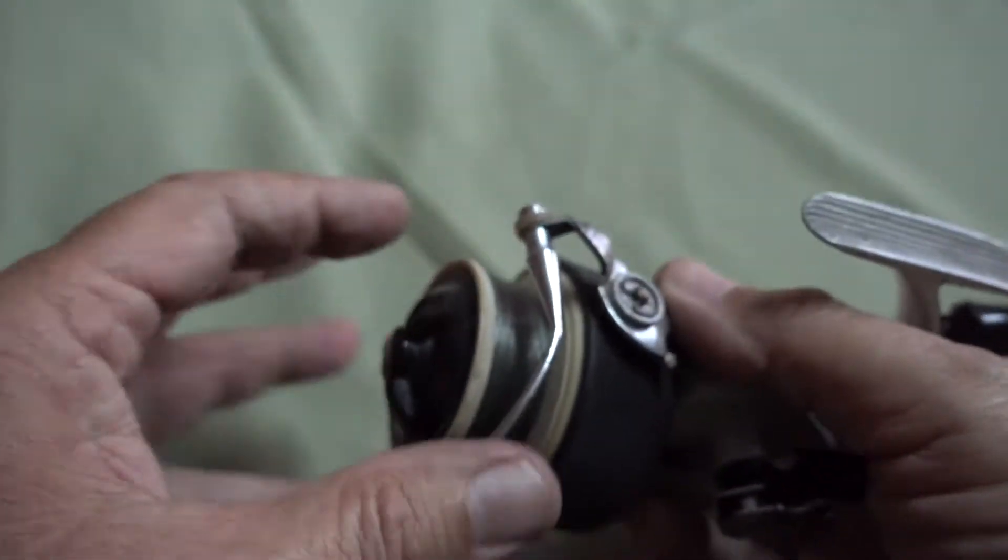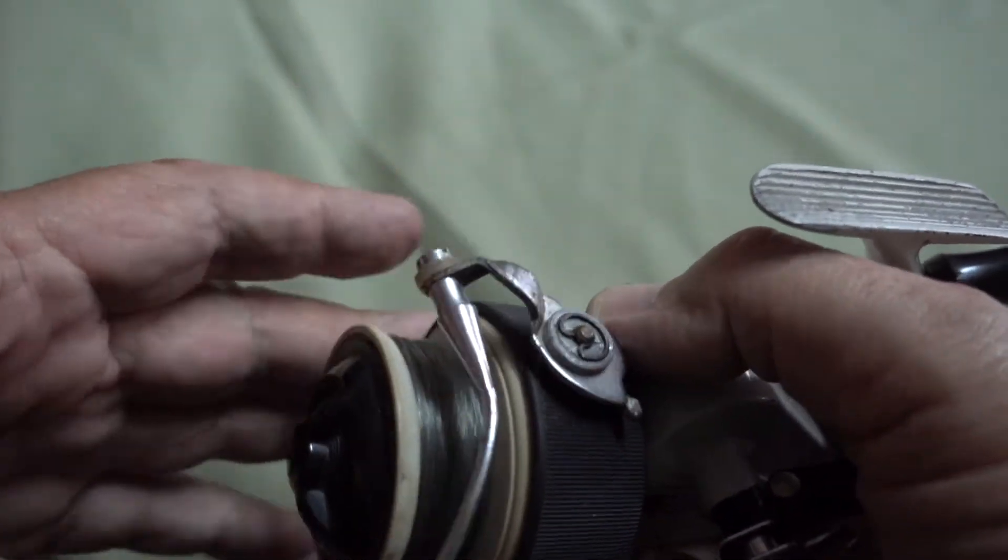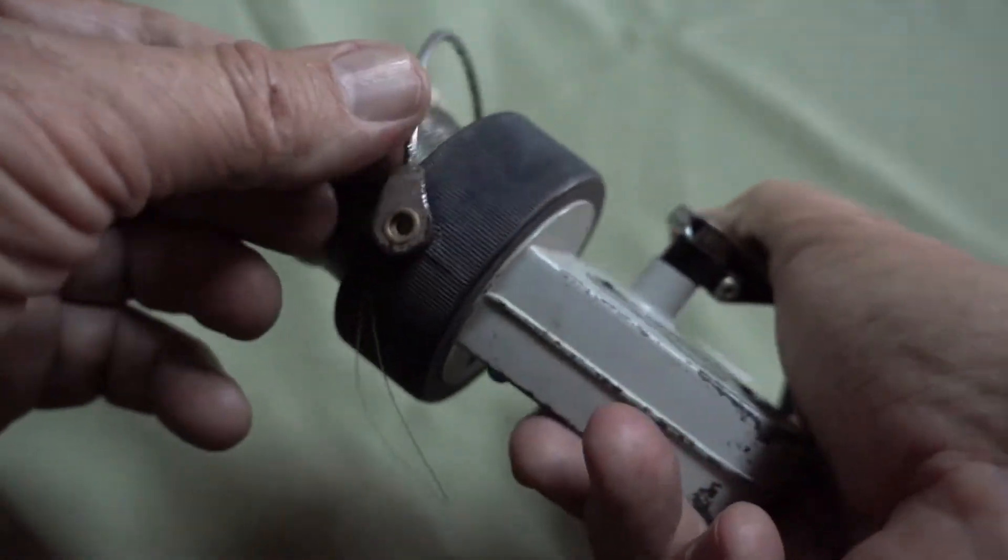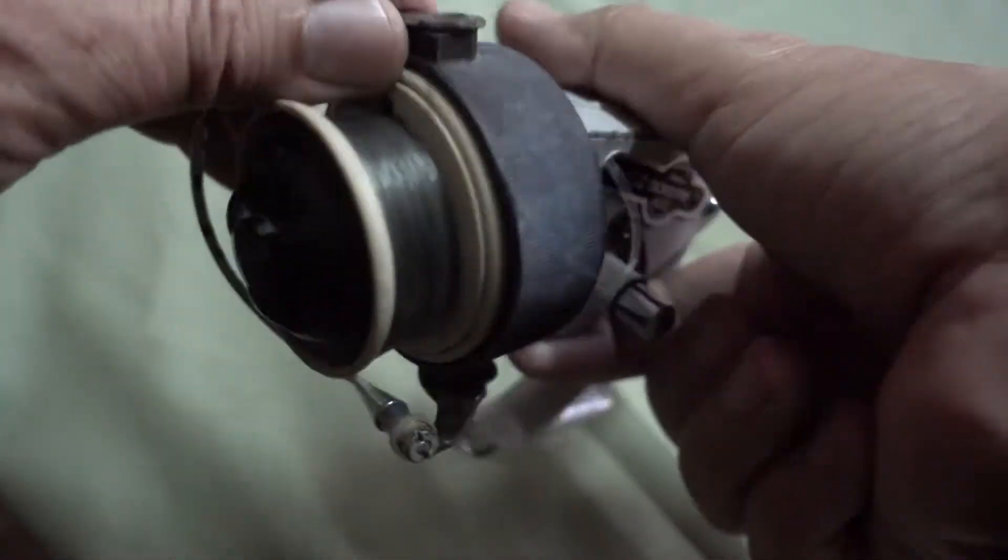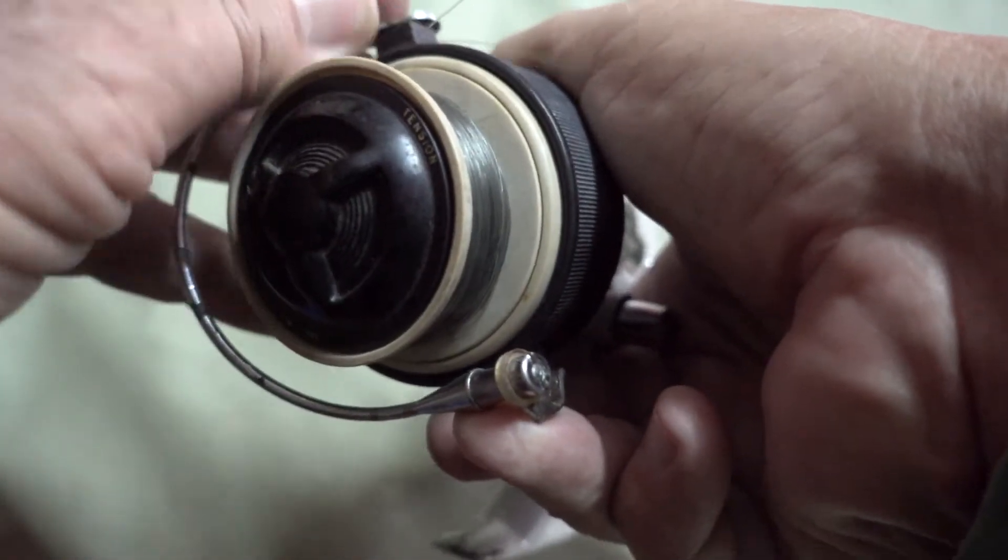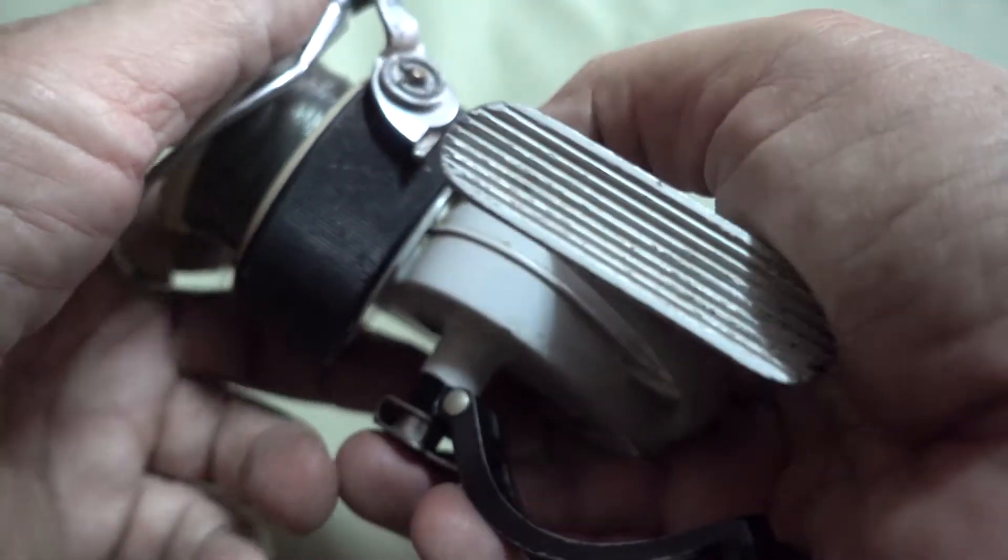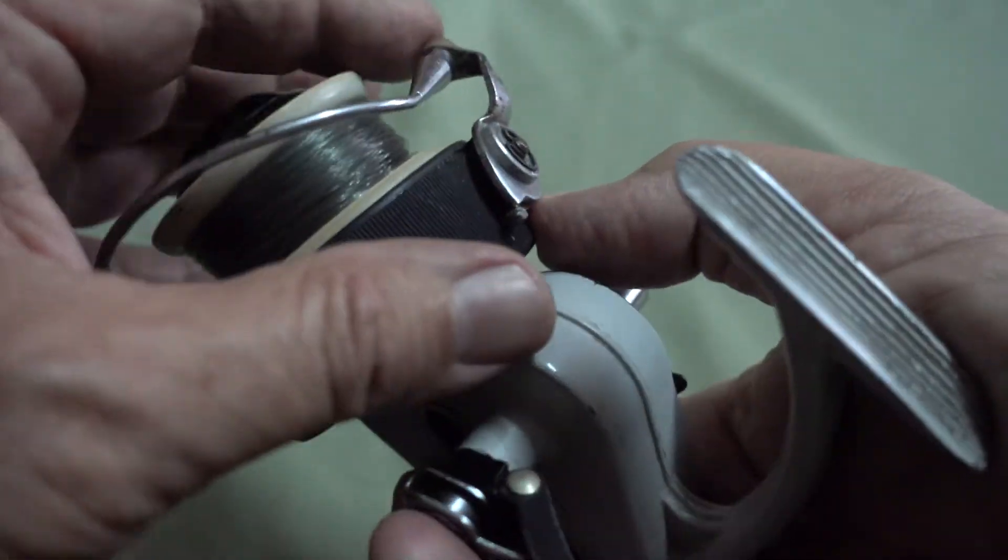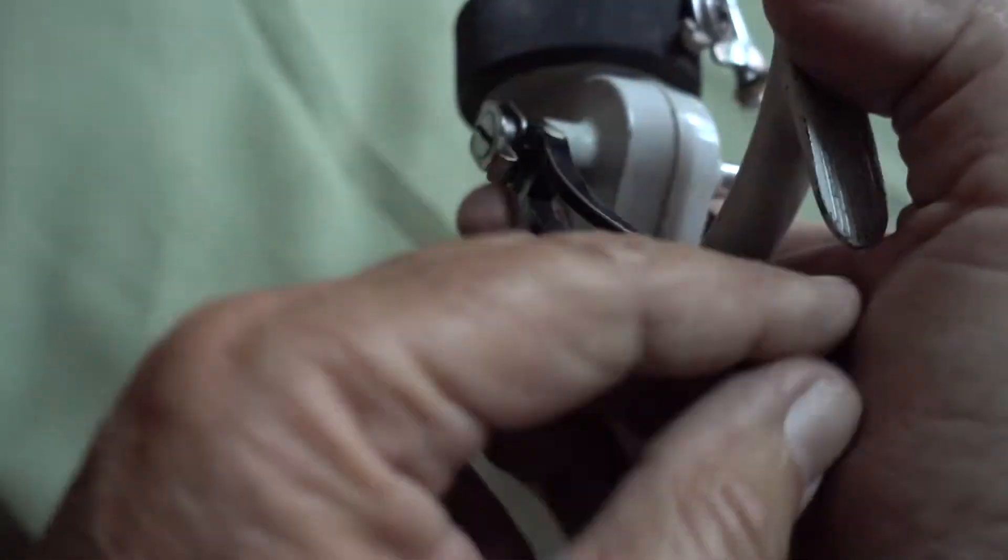Now we have the roller on the bail arm. Rather a simpler bail arm attachment. This just sits into the hole there. It's not really been attached. And then you have this circlip retaining it. The folding handle.